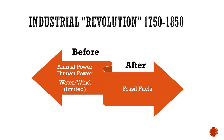The Industrial Revolution can be thought of as a shift in the energy sources for production. Prior to it, we relied almost entirely on either human or animal power to get things done — with some exceptions such as water wheels or windmills. The Industrial Revolution shifted our power source to fossil fuels. Initially this energy source was coal, but over time petroleum and electricity would be used as well.